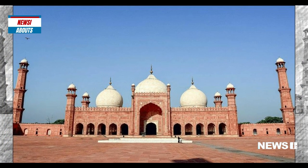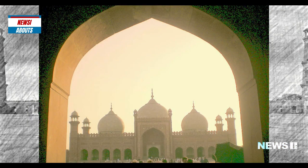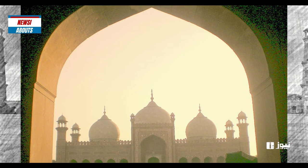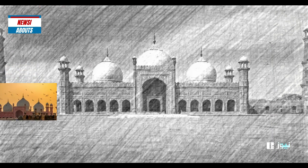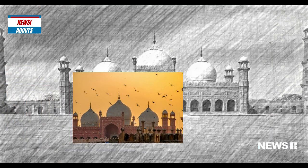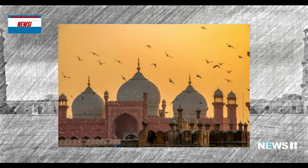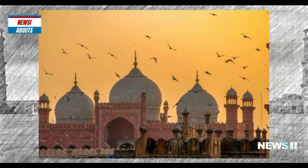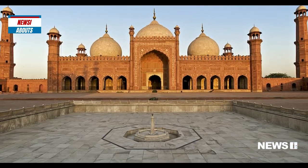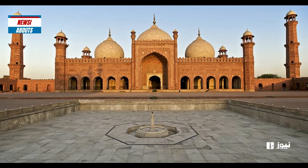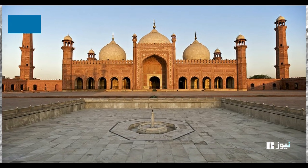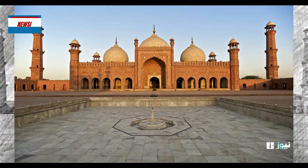The most notable feature of the mosque is its large central dome, which is supported by four smaller domes. The mosque also has two minarets, each of which stands at a height of 176 feet.